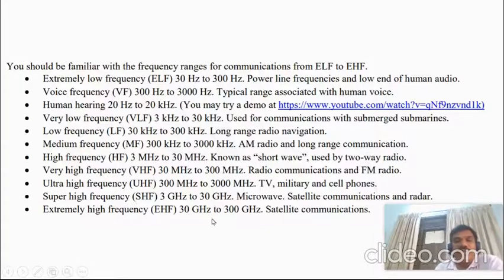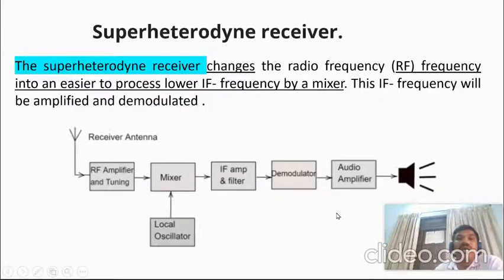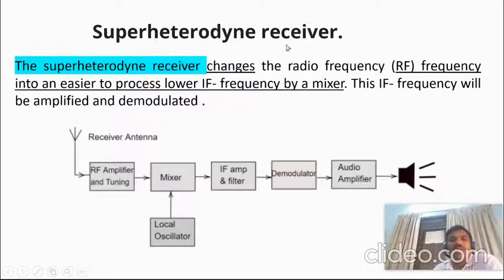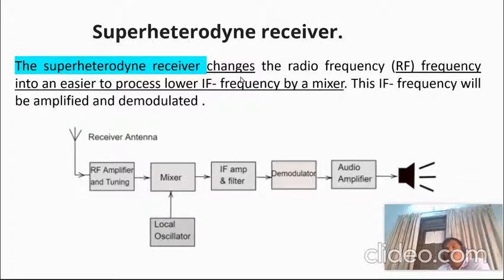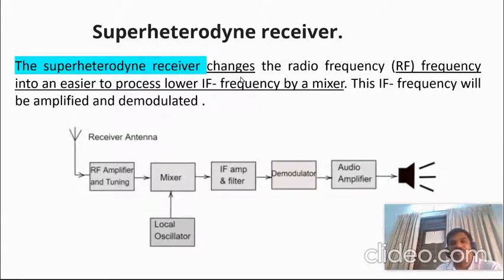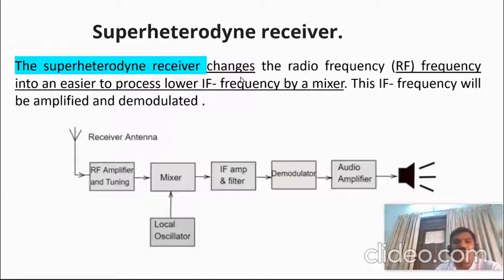Extremely High Frequency is also used for satellite communication. Now, as per your syllabus, you need to study the modulation techniques — AM and FM — and also the super heterodyne receiver. The super heterodyne receiver is used at the receiver side. We will continue with the super heterodyne receiver in the next class. Thank you.